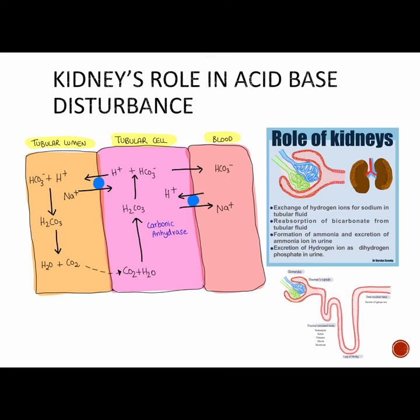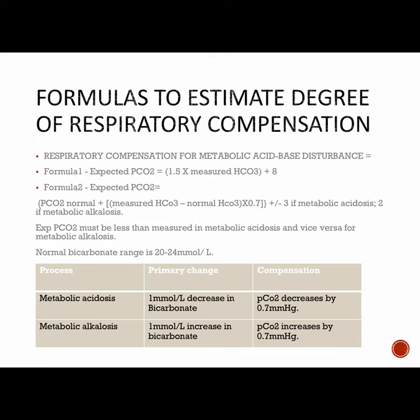To find out whether compensation is happening or not, you can use one of these formulae. There are two important rules about compensation: the body does not overcompensate, and compensation does not return the pH to normal range. The first formula is simple; the second has more math and gives the result in a range, with correction factors such as plus or minus 3 for metabolic acidosis and plus or minus 2 for metabolic alkalosis.